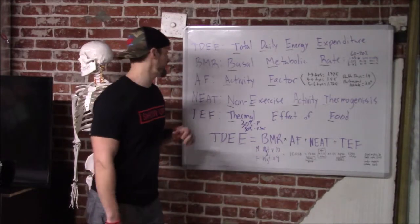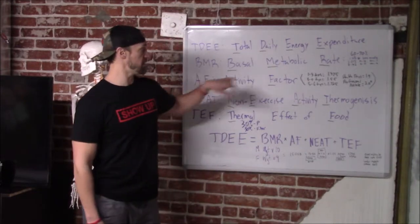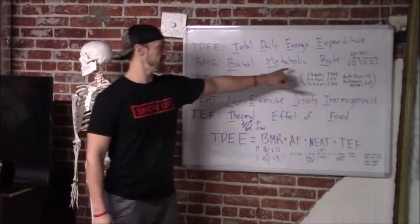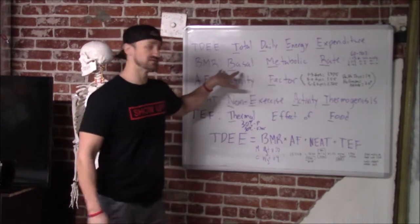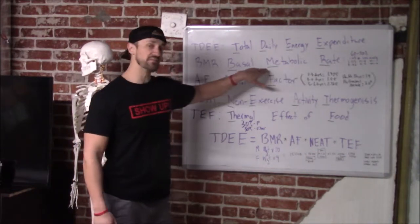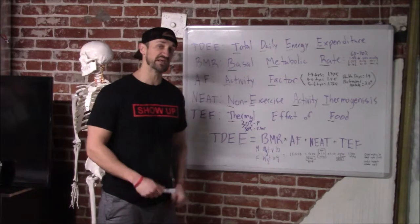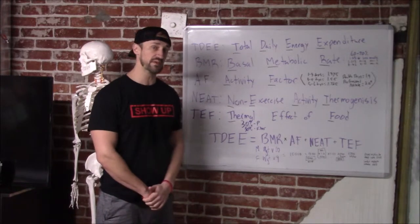Let's break down the equation starting with BMR — basal metabolic rate. Basal is your baseline metabolism. This is about 70% of the fuel that we burn, and it's going to be driven by the number one organ that takes the most calories.